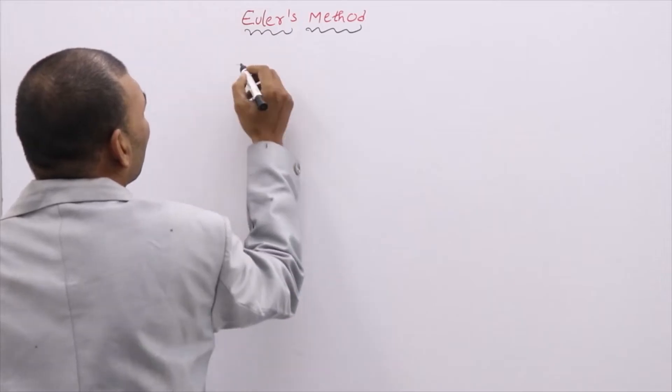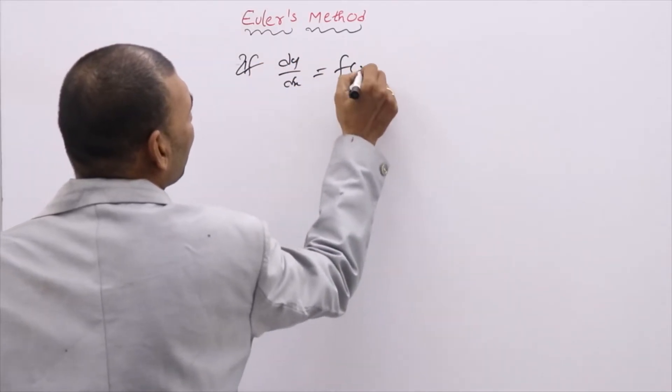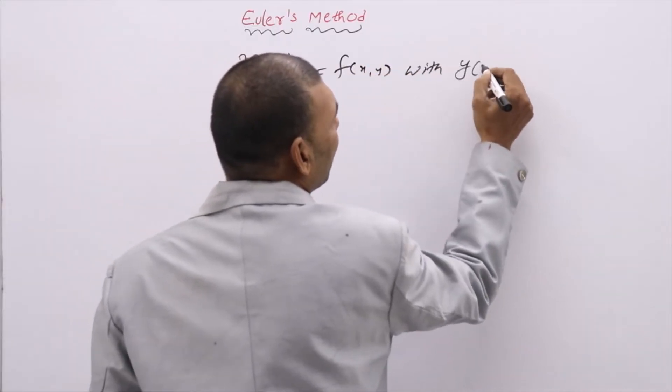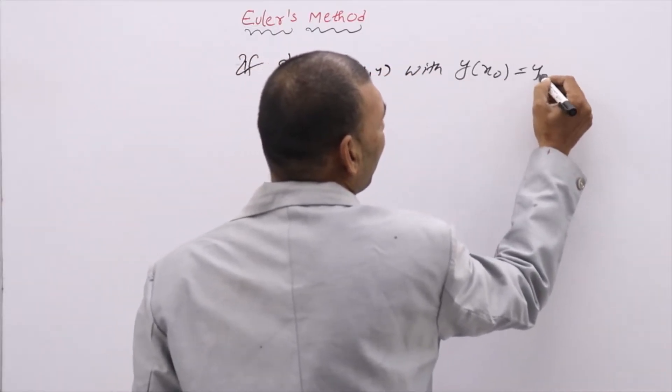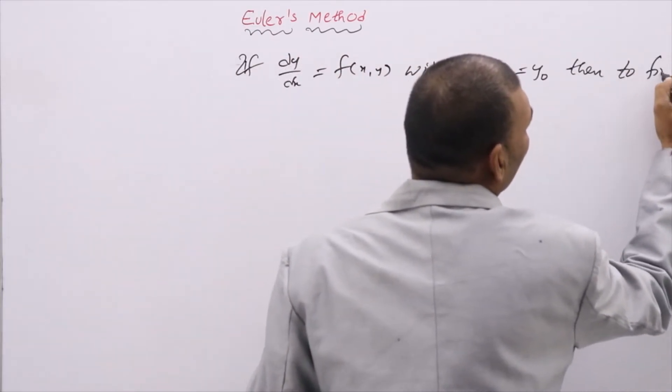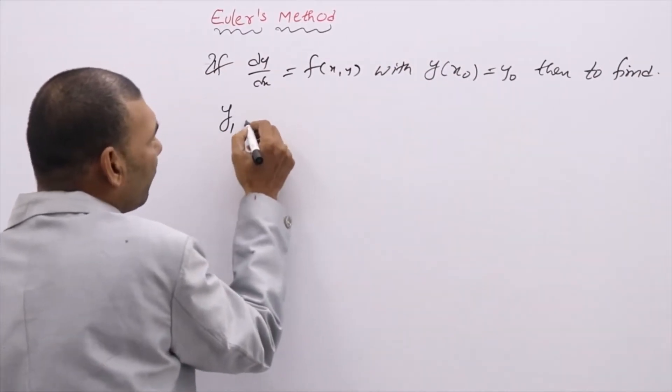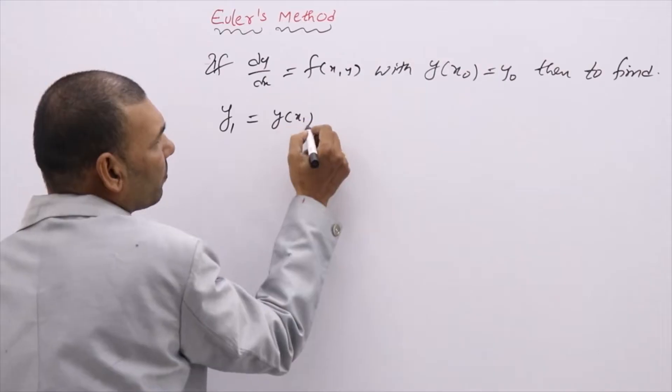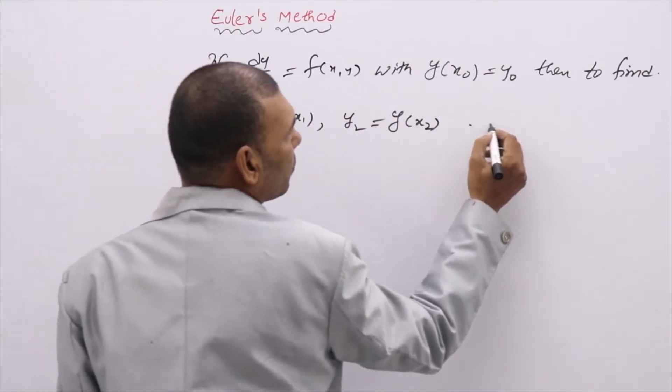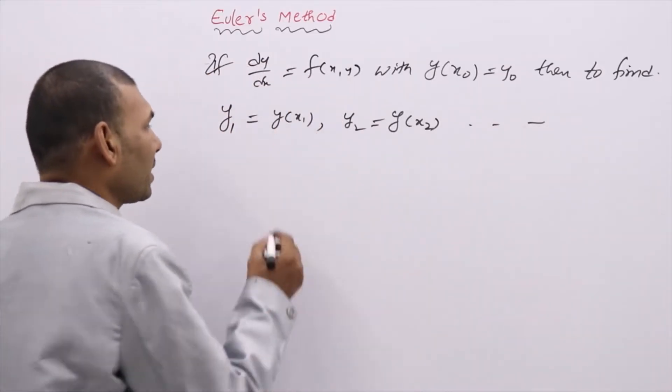if dy/dx = f(x,y) with initial condition y(x₀) = y₀, then to find y₁ which is y(x₁), y₂ which is y(x₂), and so on. To find these all, we have our standard general formula.